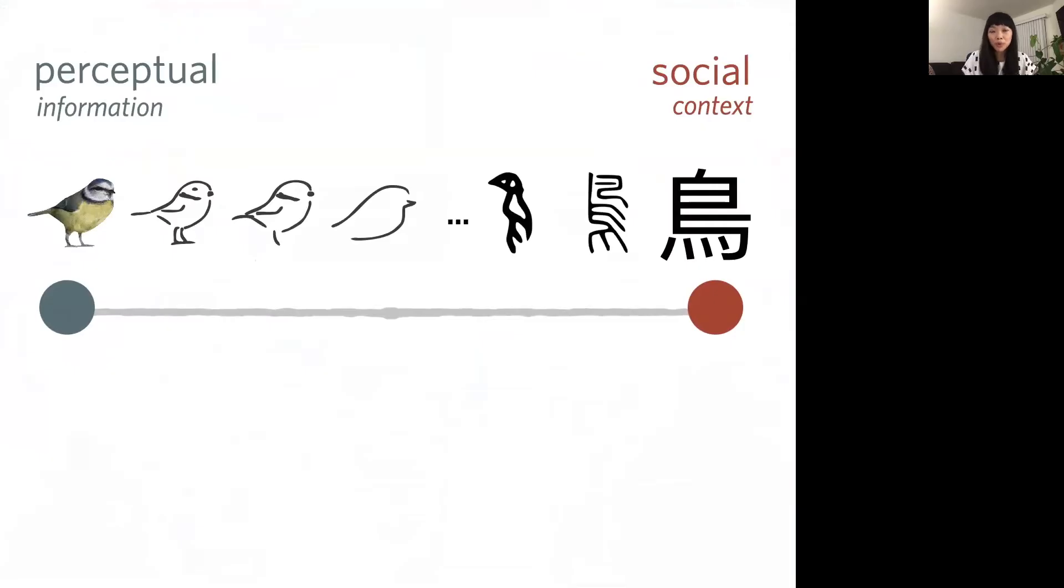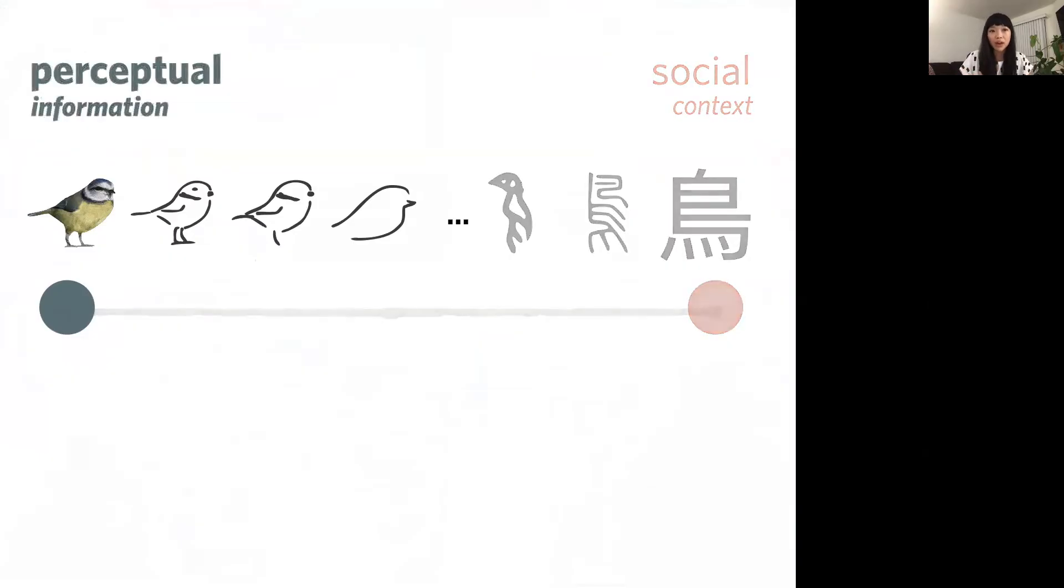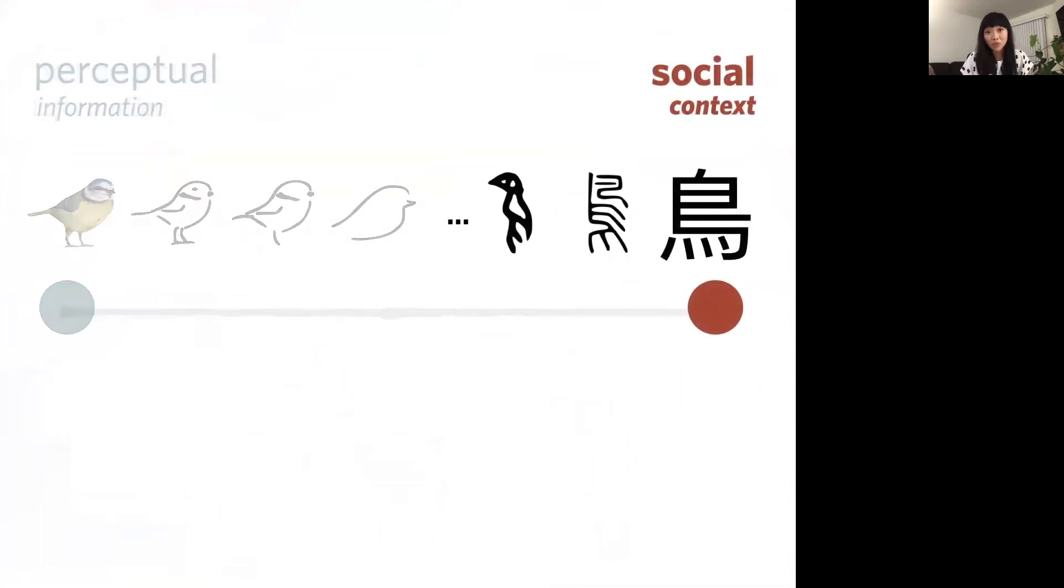And the idea is that while both of these sources of information matter, their contributions vary across contexts. And close to each endpoint of this axis, either perceptual information or social context dominates. So for example, on the left, these drawings correspond to the bird primarily in virtue of visual properties they share with the bird image. On the right, however, exemplified by these Chinese characters are symbols that correspond to the bird in virtue of an abstract symbolic relationship that only literate members of the Chinese language community will understand.